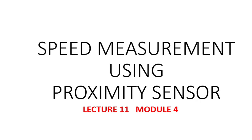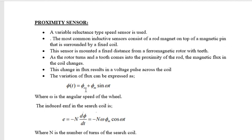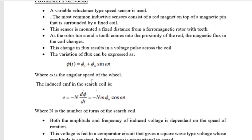Welcome to lecture 11 of module 4: speed measurement using proximity sensor. A proximity sensor is a variable reluctance type speed sensor. Reluctance type means we are using an inductive coil.